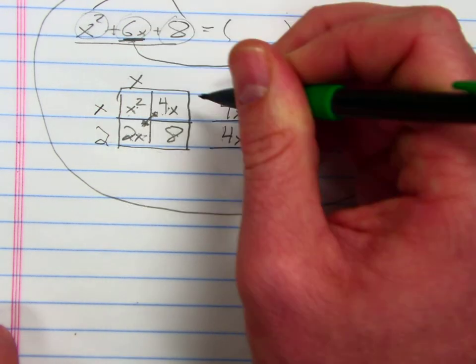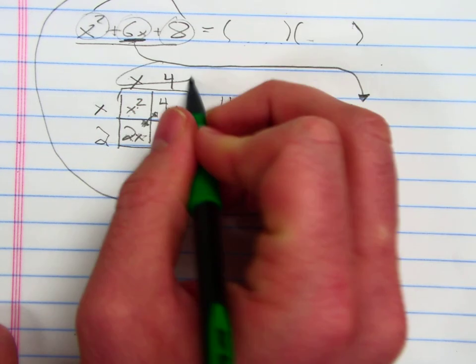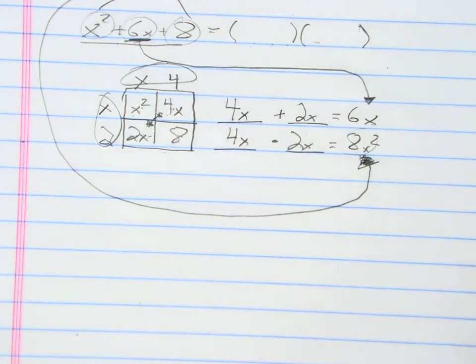So now I've found the factors of this polynomial. I know that I have x plus 2 times x plus 4.